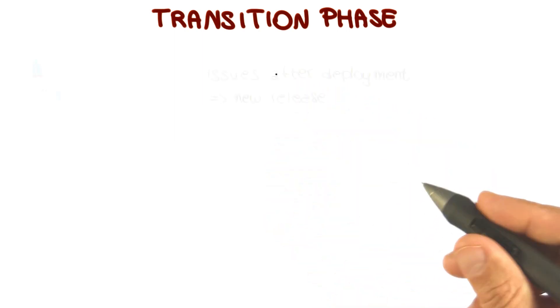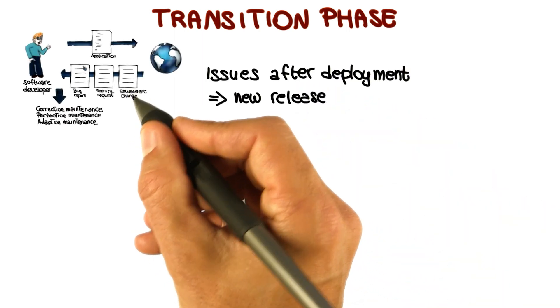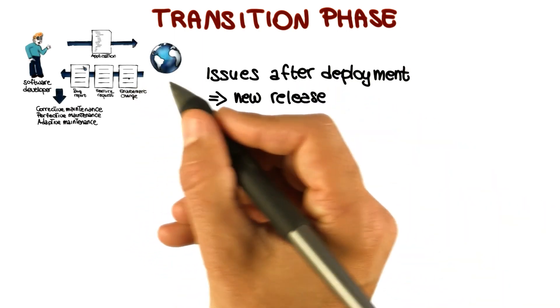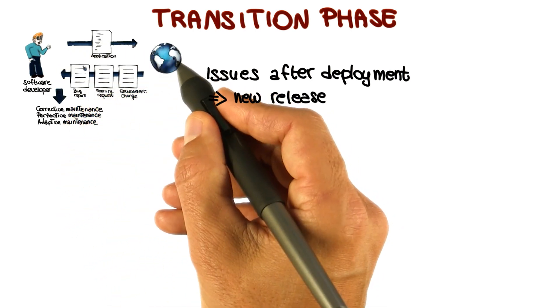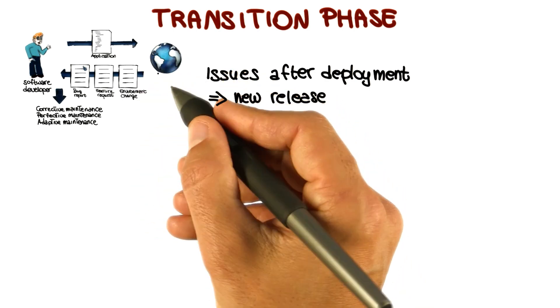So what are the main activities in the transition phase? As we discussed in our initial lessons, in most real world cases, there are issues that manifest themselves after deployment when we release our software and actual users interact with the software.